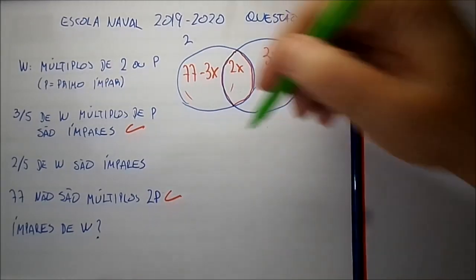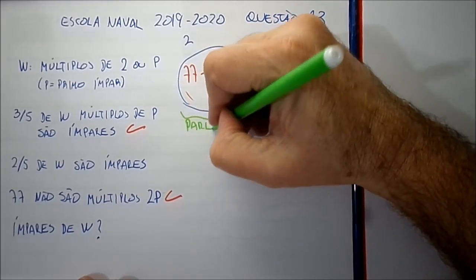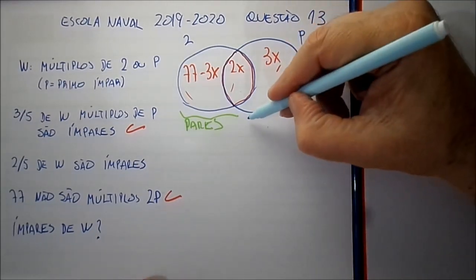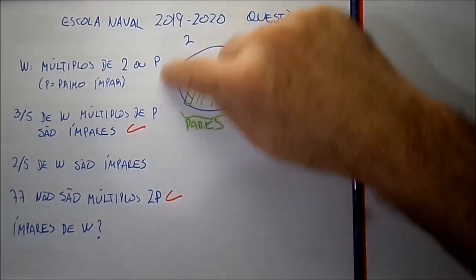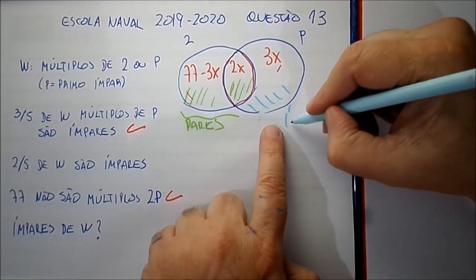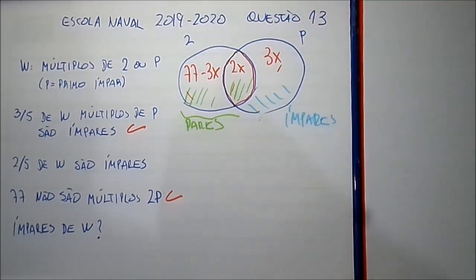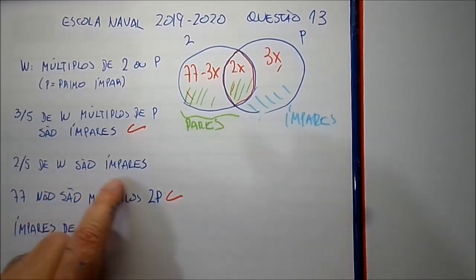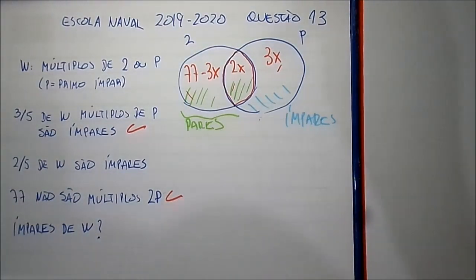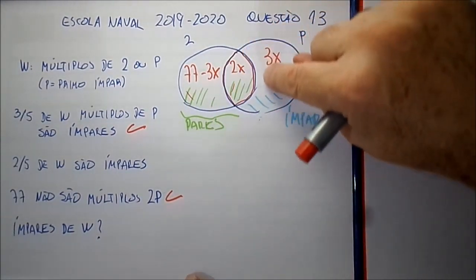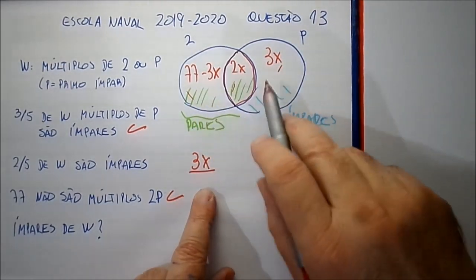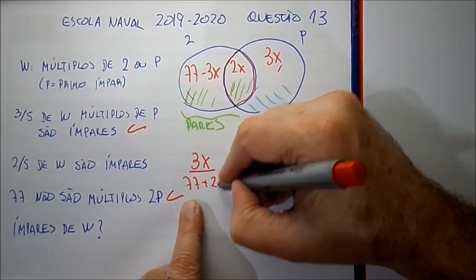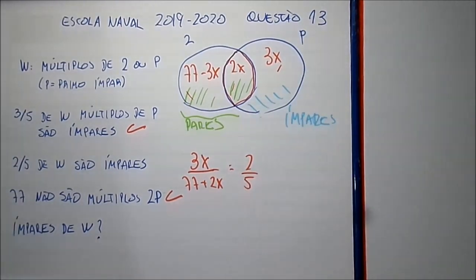Os pares incluem toda a parte de múltiplos de 2 e mais a interseção. Os ímpares são os múltiplos de P que não estão na interseção — 3x. Então, 2 quintos dos elementos de W são os ímpares, ou seja, 3x dividido pelo total é igual a 2 quintos. O total é 77 mais 2x. Então: 3x dividido por (77 mais 2x) é igual a 2 quintos.